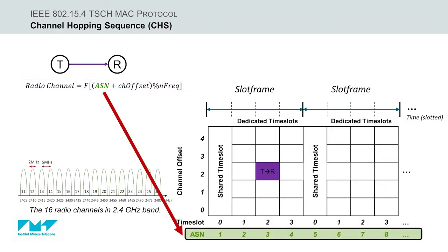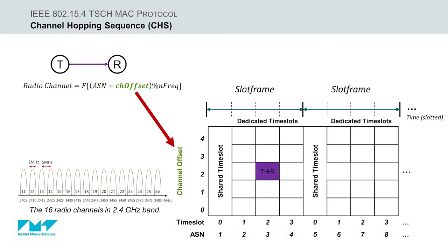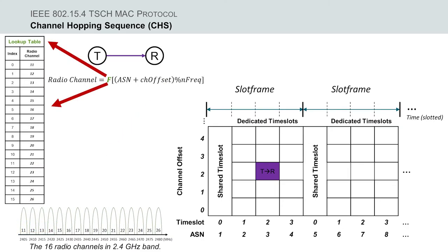Where absolute slot number, or ASN, indicates the number of time slots elapsed since the network started. The channel offset we have previously explained. Then NFREC is the number of available physical radio channels.